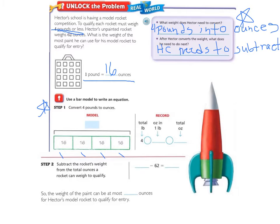Now let's remember, when we're going from a unit that's bigger to a unit that's smaller, we multiply. So when we multiply the 16 times 4, we get 64. So when we convert 4 pounds to ounces, we get 64 ounces.